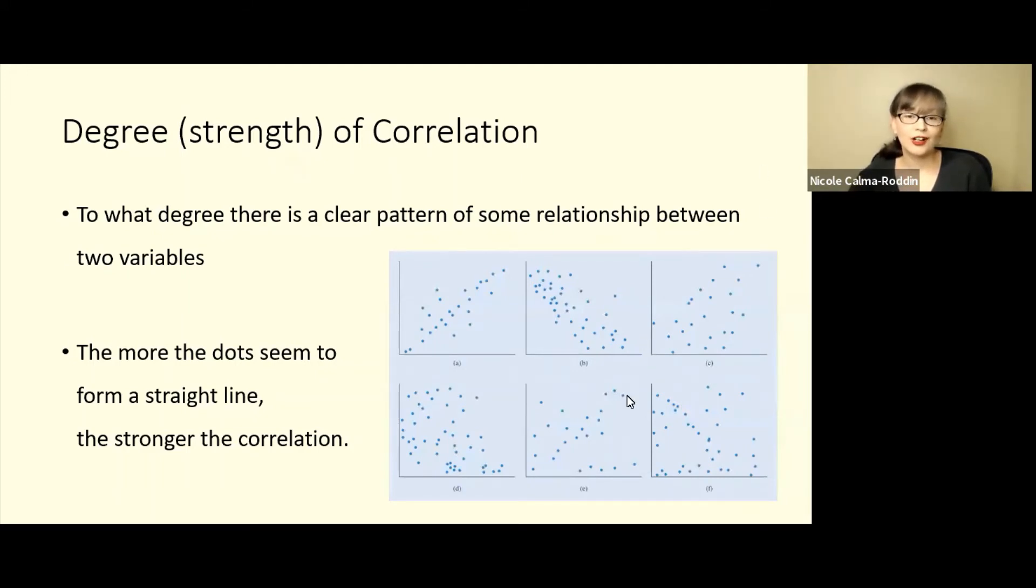So if we look at the pictures here on this slide, we can see that something like this, like letter A here, is going to be a stronger correlation, whereas something like D here is going to be a weaker correlation. Just from a scatter plot we can tell something about this degree or strength.